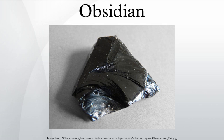Obsidian is also used for ornamental purposes and as a gemstone. It possesses the property of presenting a different appearance according to the manner in which it is cut: when cut in one direction it is jet black; in another it is glistening grey. Apache tears are small rounded obsidian nuggets embedded within a greyish-white perlite matrix. Plinths for audio turntables have been made of obsidian since the 1970s, for example the greyish-black SP-10B3 plinth by Technics.